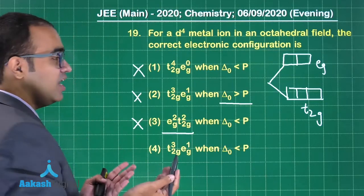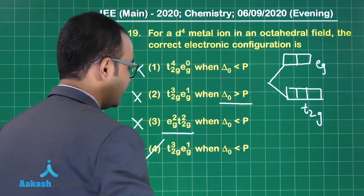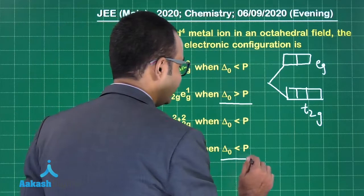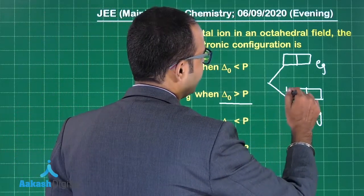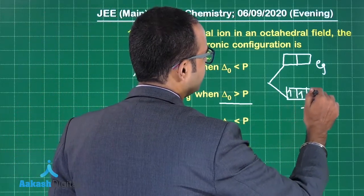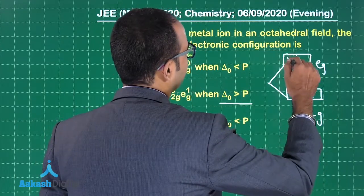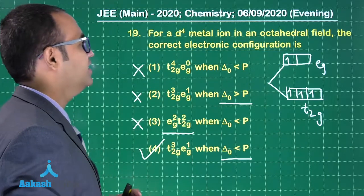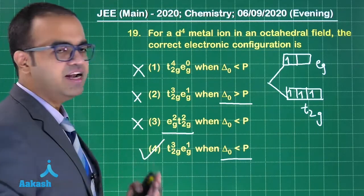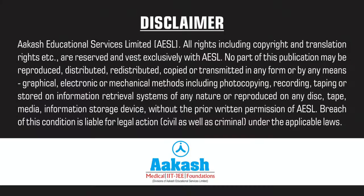That leaves only option 4: if Δo is less than pairing energy, the electrons go one, two, three in t2g and the fourth electron goes into eg. Very simple question. Moving on to question 20.